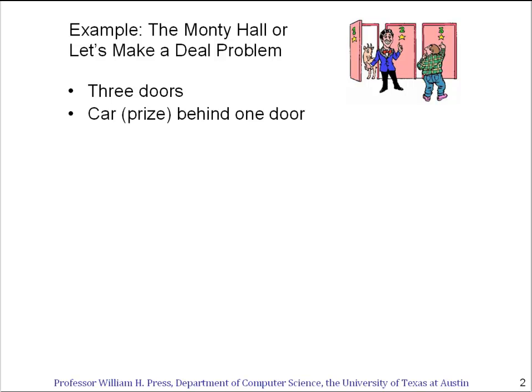Monty Hall is the host of the game, and he explains to you, the contestant, that there's a car — a prize — behind one of the doors. Another door simply has a goat, or some not very valuable prize behind it, something you definitely don't want. Now you pick one of those three doors, but the important point is you don't get to open it yet.